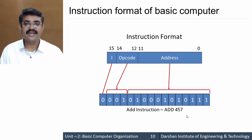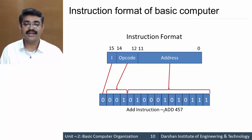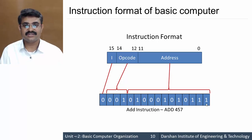For the instruction 'ADD 457', the opcode for ADD is 001, followed by the binary representations of 4, 5, and 7 forming the address field 457. This is how the instruction is encoded in binary.